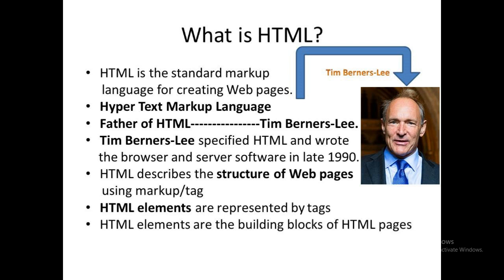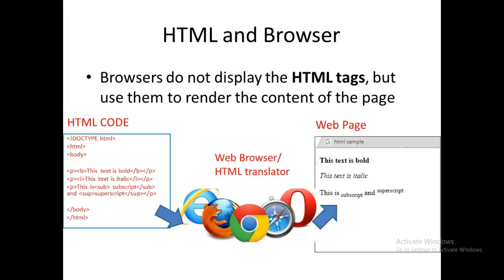HTML describes the structure or look of webpages by using markup or tags. HTML elements are represented by tags. These tags or HTML elements are the building blocks of HTML pages. Browsers do not display HTML tags or HTML code as a web page, but instead use them to render or translate them into content that is displayed on a web page.